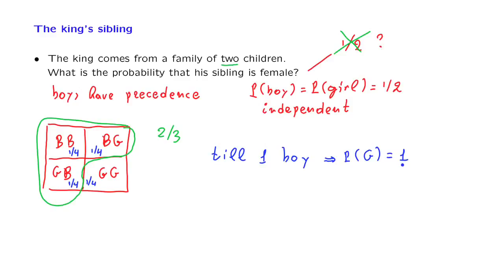So in this case, the probability that the king's sibling is a girl is equal to 1. The only reason why they had two children was because the first was a girl and then the second was a boy.